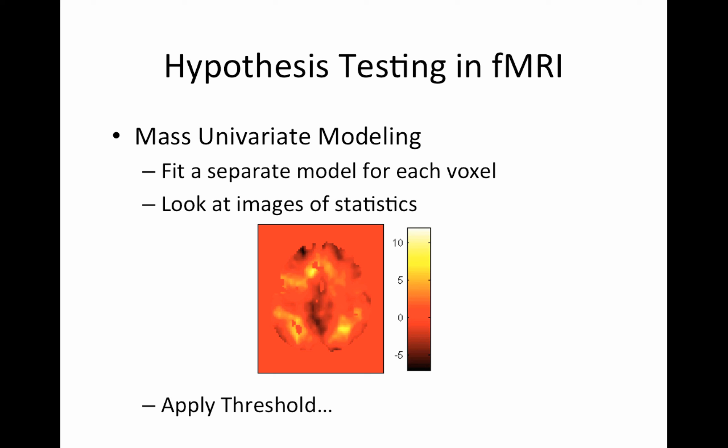But they're not a bag of voxels. We actually have an image, and images have other properties. So when we're going to threshold our images, we have to think about bag of voxels versus the fact that we're working with an actual image. So anyway, we fit our separate model for each voxel. We have a t-statistic for each voxel, and now we would like to compute some sort of p-value and threshold our map.